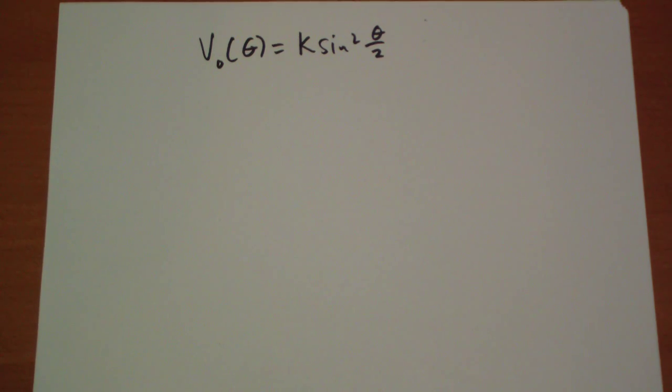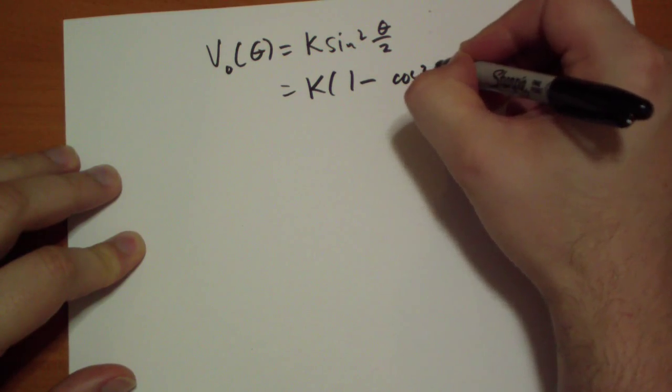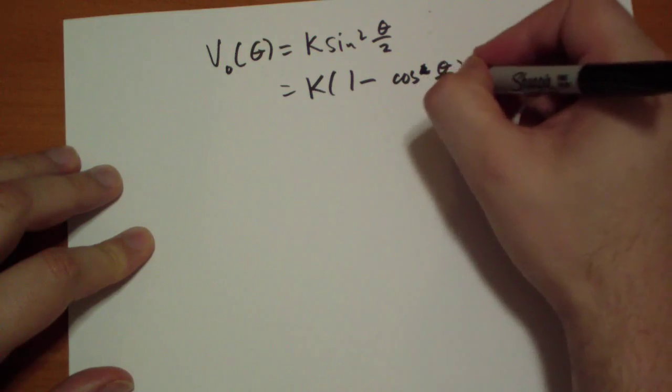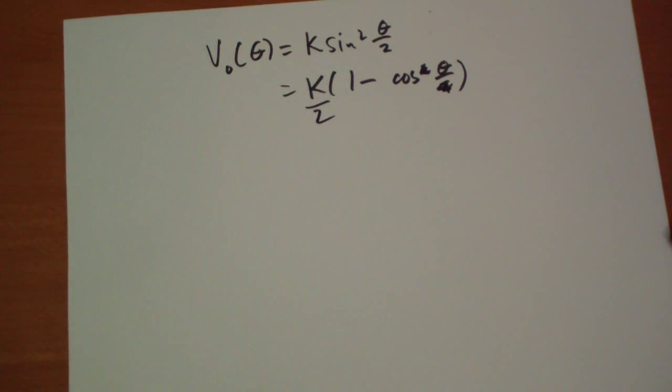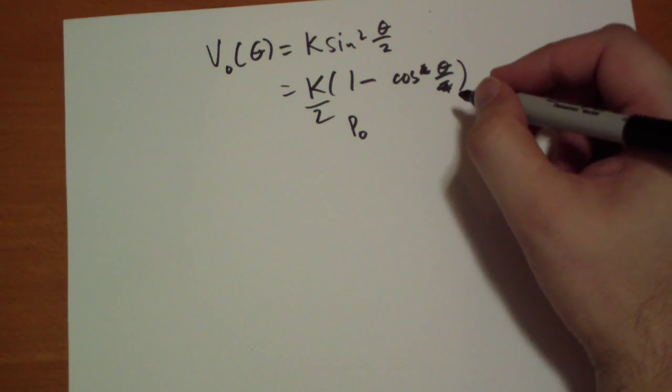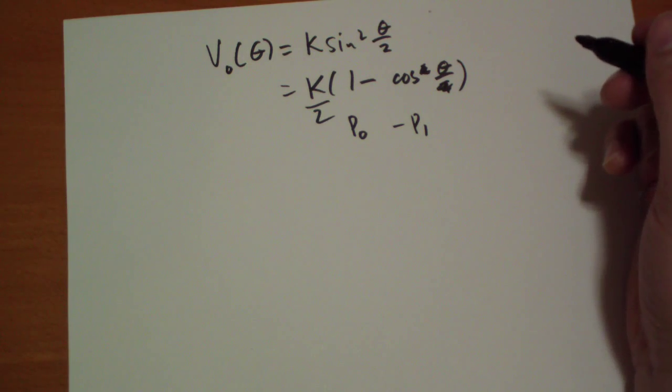In that case we can use the half angle formula. So we can rewrite this as equal to k times 1 minus cos theta over 2—no what am I doing wrong here. Using the half angle formula, sine squared theta over 2 is equal to 1 minus cos theta over 2. Let's put the 2 over there. Well, 1 this is just P_0 cos theta, and this term right here, this is just negative P_1 cos theta, right?